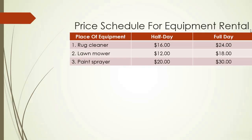Here is the table. The company rents three products — rug cleaner, lawnmower, and paint sprayer — for half a day or full day. Half a day costs $16, $12, or $20 respectively, and full day costs $24, $18, and $30. The full day costs 50% more than the half day. So for lawnmower: 12 plus 6 equals 18; paint sprayer: 20 plus 10 equals 30; rug cleaner: 16 plus 8 equals 24. We'll simply add 50% to the half day price.